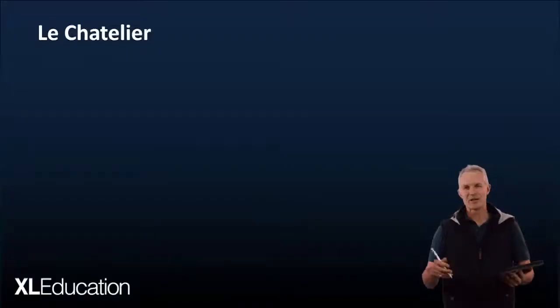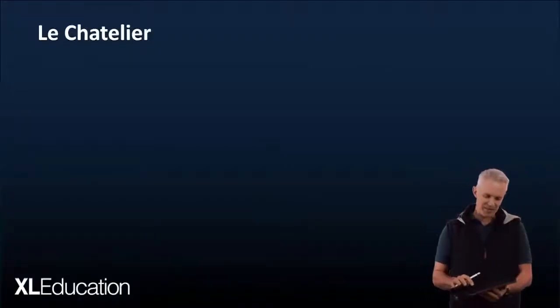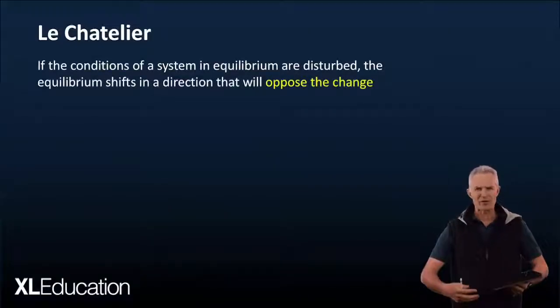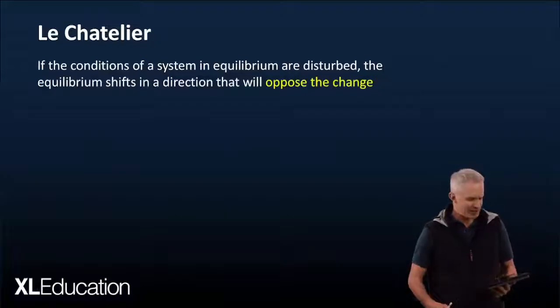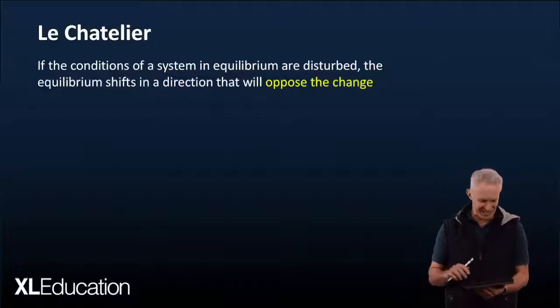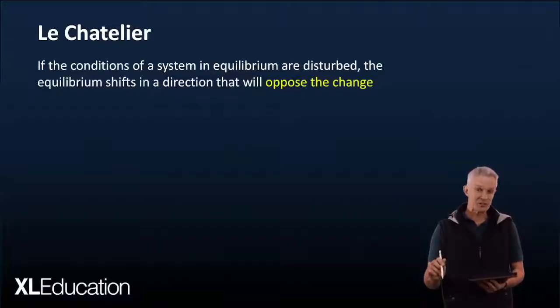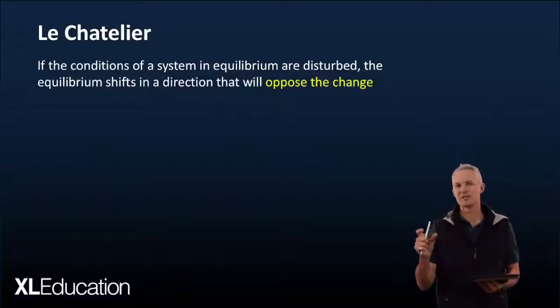Now Le Chatelier, a French scientist, had this understanding of how equilibrium system works and it's all about being a little bit of a rebel. So I'll explain that in more detail as we go along. If the conditions of a system in equilibrium are disturbed, the equilibrium shifts in a direction so as to oppose the change.